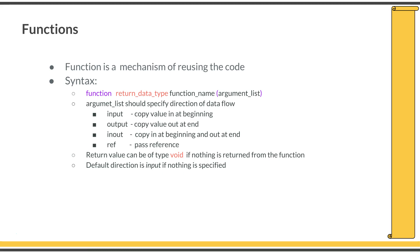In SystemVerilog, we will first look at functions. A function is a mechanism of reusing code. The syntax to declare a function is: keyword 'function' followed by the return data type, then the function name, and within the brackets the argument list. The return data type must be 'void' if the function is not returning anything; otherwise it can be any valid data type. In the argument list you must specify the direction of data flow.